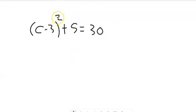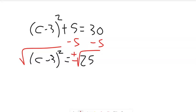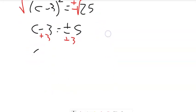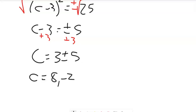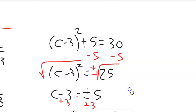Notice the square isn't all the way alone here, so I need to isolate it before square rooting. I'll subtract 5 from both sides first, giving me c minus 3 squared equals 25. Now the square is all alone, so I'll square root both sides. Plus or minus comes in when you bring in the square root. So c minus 3 equals plus or minus 5. Add 3 to both sides: c equals 3 plus or minus 5, which gives c equals 8 or c equals negative 2.